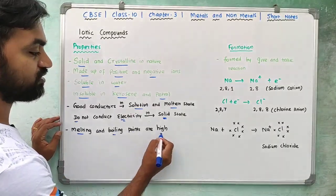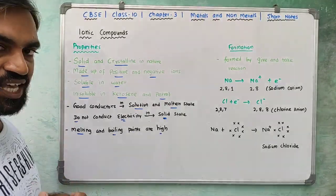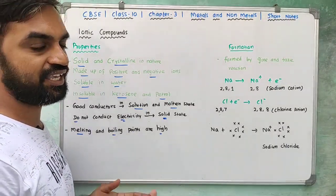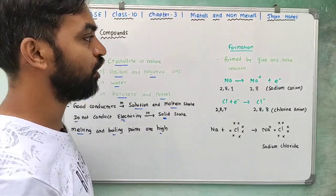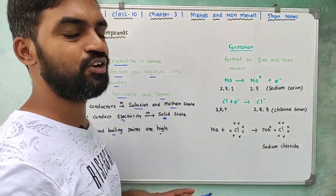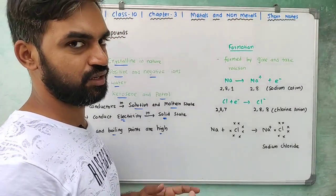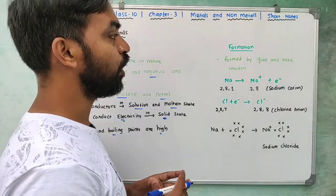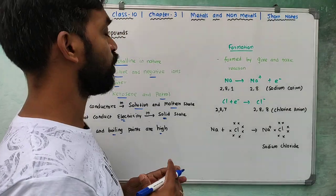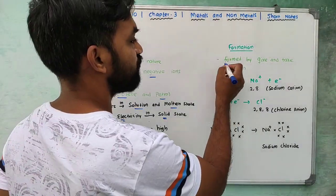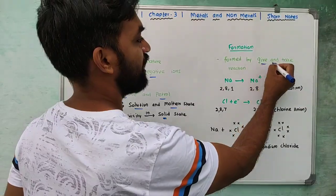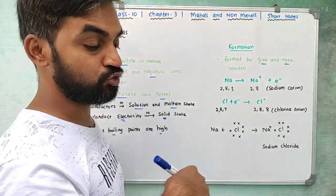Ionic compounds have high melting and boiling points. They are formed by a give-and-take reaction — transfer of electrons between atoms.